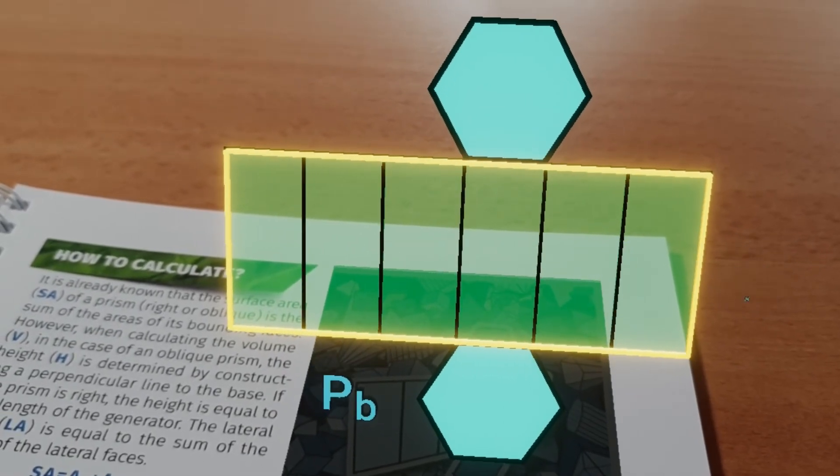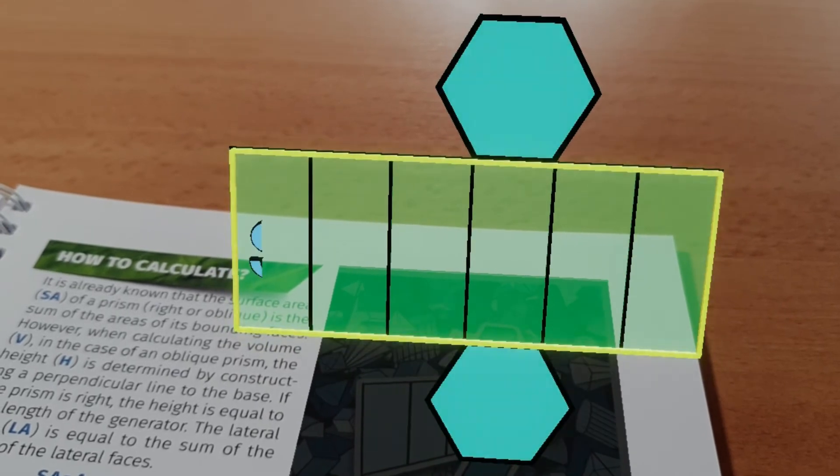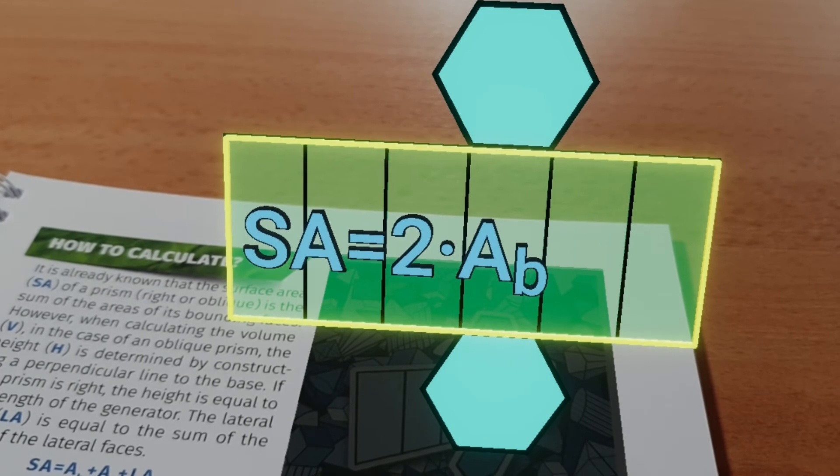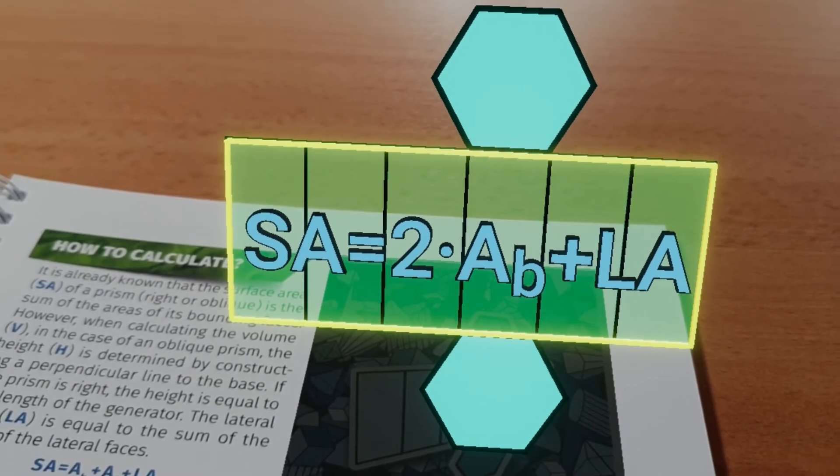The surface area of the prism is the sum of the areas of the faces of the solid, so twice the area of the base plus the area of the lateral surface.